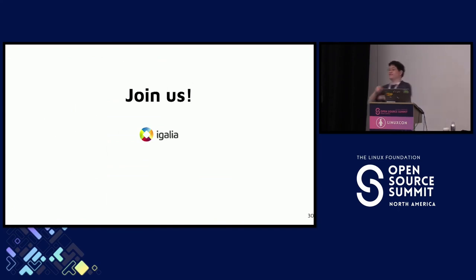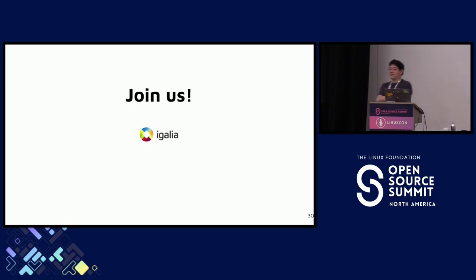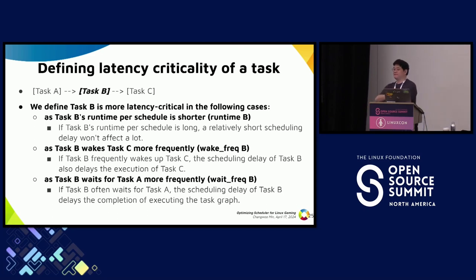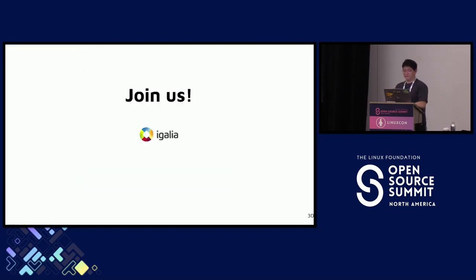Question: would half-grasms get data fluctuations? I do not explicitly maintain the task graph. I just maintain each task's average runtime, wake frequency, and wait frequency per task. I use other BPF data structures — mostly hash tables and arrays. Any other questions? If you want to play with games — and schedulers — please join us at Igalia. Thank you.